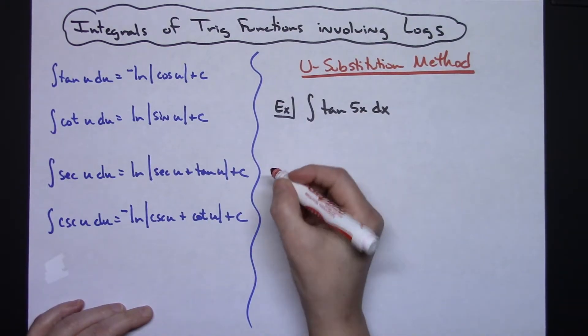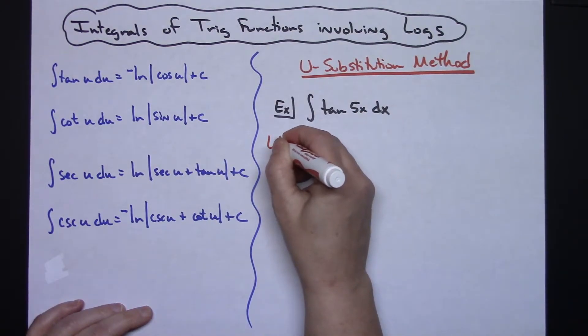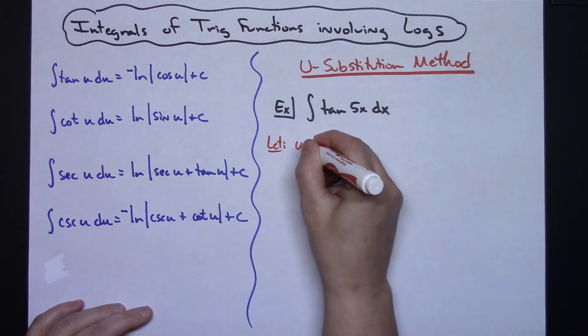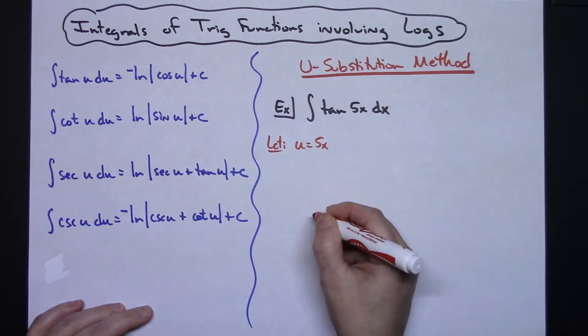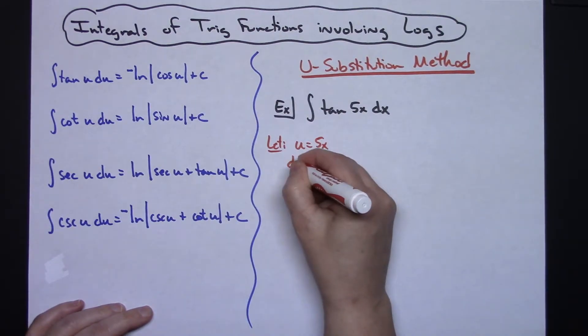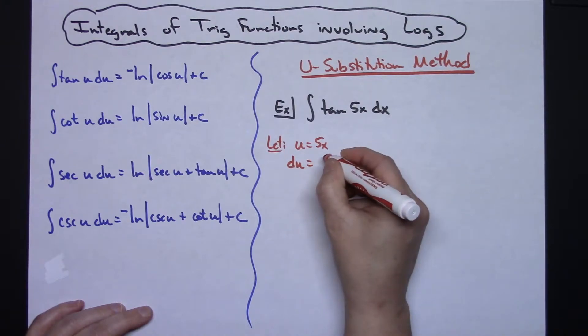The inside part of this function would be 5x, so I'm going to let my u be 5x. I'm going to take the derivative of both sides and when I do that I'm going to have du, and then derivative of 5x is 5 dx.